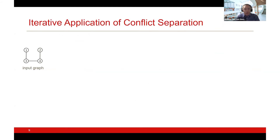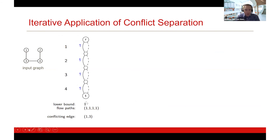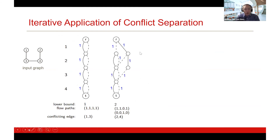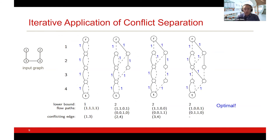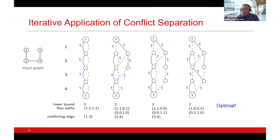The overall procedure: start with the trivial diagram, compute the flow, get a lower bound of one, find a conflicting edge and separate it. Recompute the flow, get a lower bound of two, find another conflicting edge, separate it. Continue until no more conflicts are found, then conclude optimality. We can terminate at any point for a valid lower bound, and we might prove optimality before generating the entire exact decision diagram.